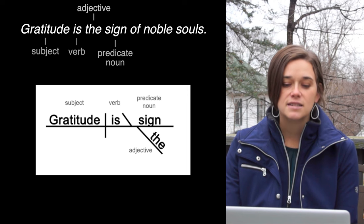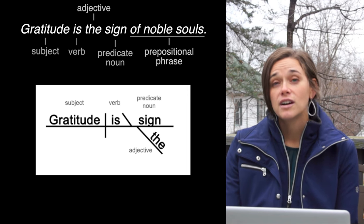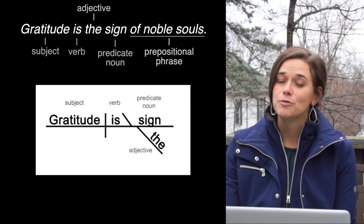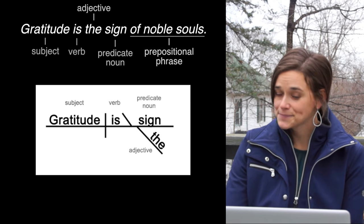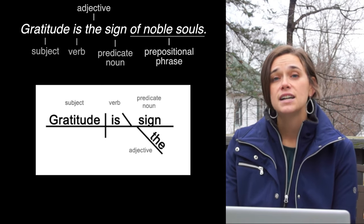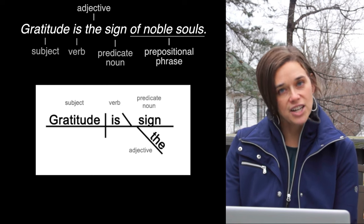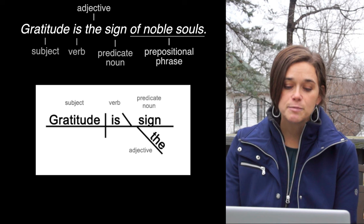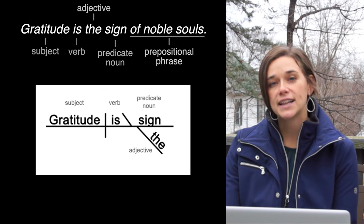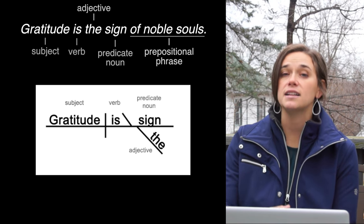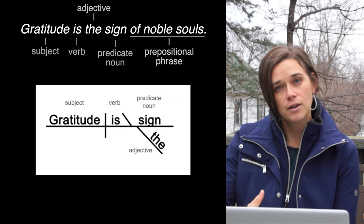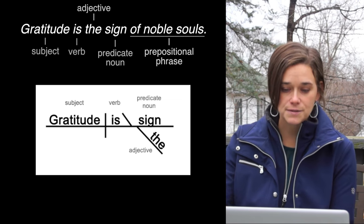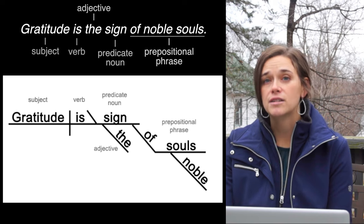The last three words in this sentence, of noble souls, are actually coming together to form a prepositional phrase. And the whole phrase is performing the job of an adjective, which means it's modifying a noun. This prepositional phrase is modifying the noun sign — it's telling us more about the sign. What kind of sign? A sign of noble souls. So we diagram it under sign.